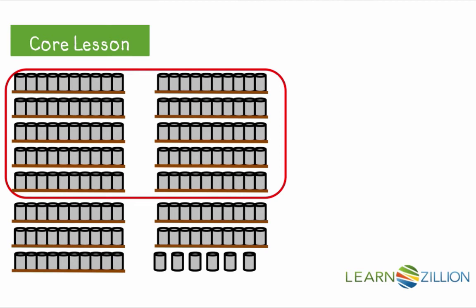Now we have one group of 100, five groups of 10, and six individual cans. Let's count the cans. We will start with 100. Then we have five groups of 10. So if we count on from 100, that would be 110, 120, 130, 140, 150.